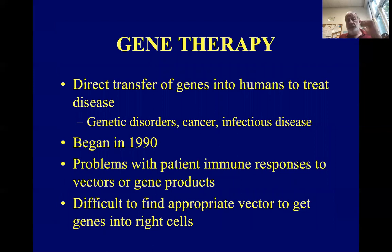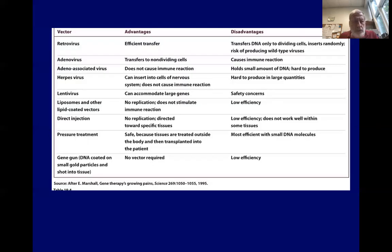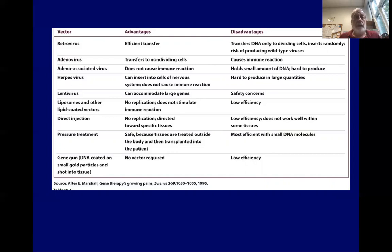Lastly, gene therapy is the direct transfer of genes into humans to treat disease, such as genetic disorders, cancer, or infectious disease. It began in 1990. The problems have been the patient's immune response to the vectors and sometimes to the gene products — the proteins the gene makes. It's been difficult to find appropriate vectors that work without triggering an immune response; people have died from immune responses to the vectors. A table shows various vectors with their advantages and disadvantages. For instance, adenoviruses — like cold viruses — can transfer into non-dividing cells but cause an immune reaction.